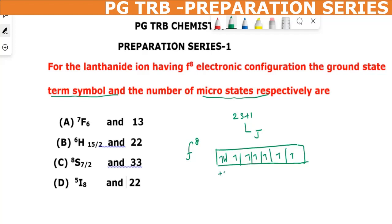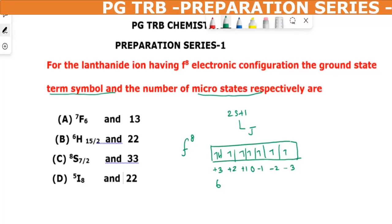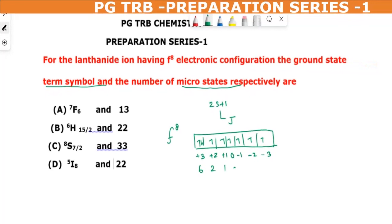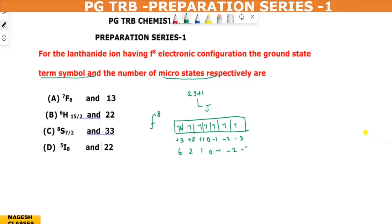In the cell orientation, it is plus three, plus two, plus one, zero, minus one, minus two, minus three. Number of electrons value is applied. In the cell six, one, two, one, zero, minus one, minus two, minus three.